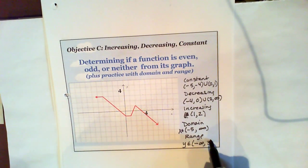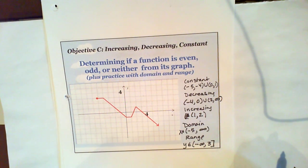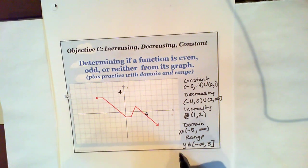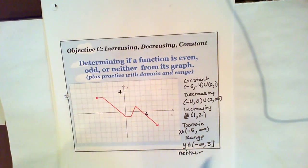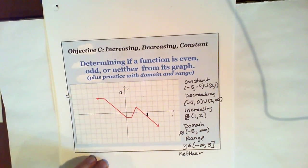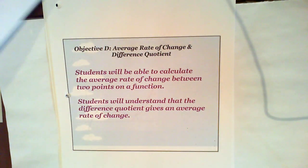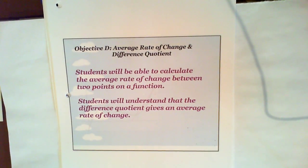This function is not even, this function is not odd — so this function is neither. No symmetry about the y-axis, no symmetry if I turned it upside down. So the next section that we need to get into is talking about the average rate of change. In your textbook, the average rate of change is described starting on page 167.